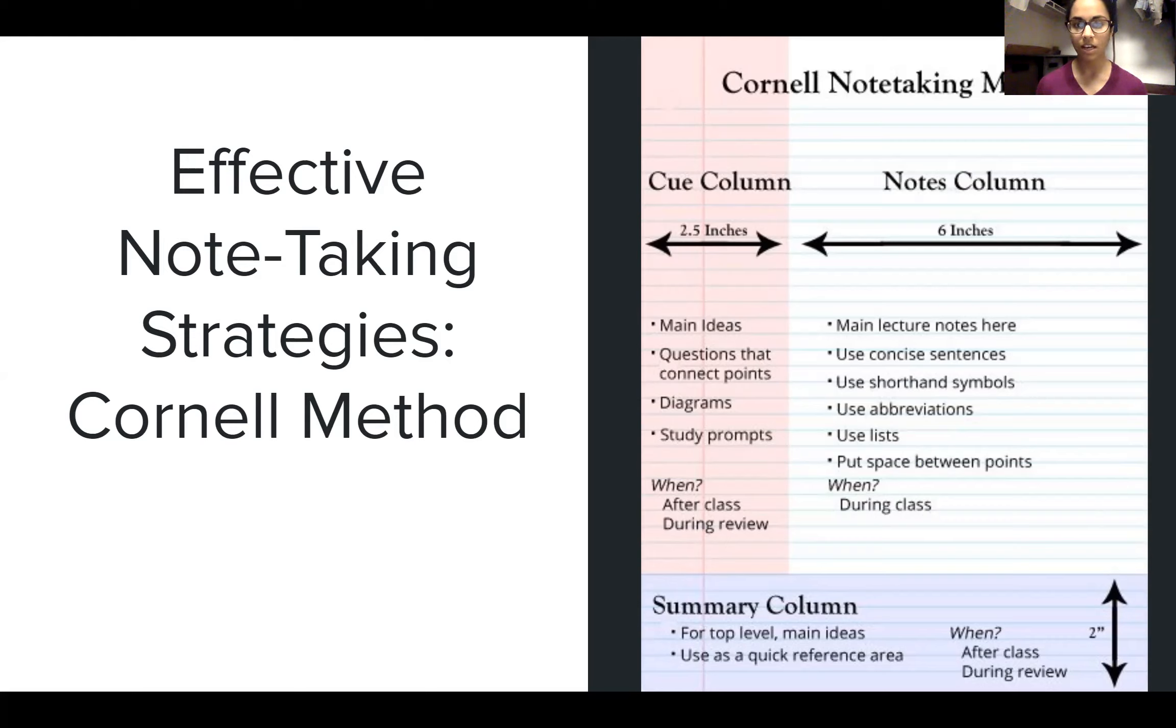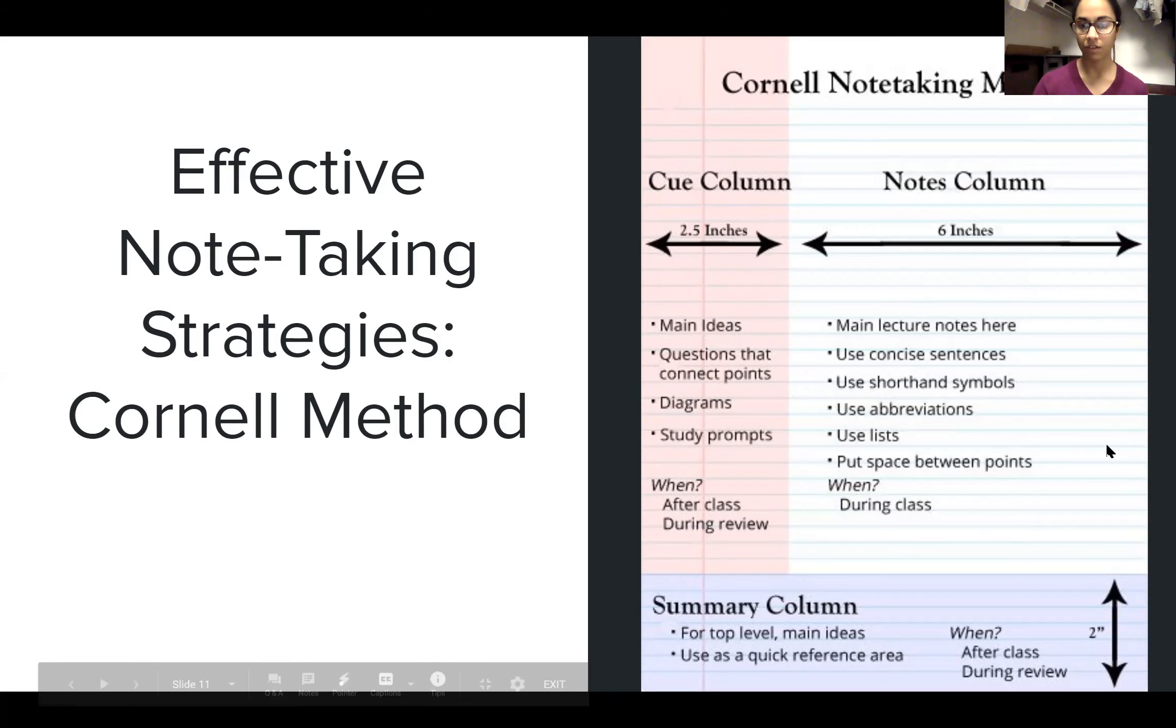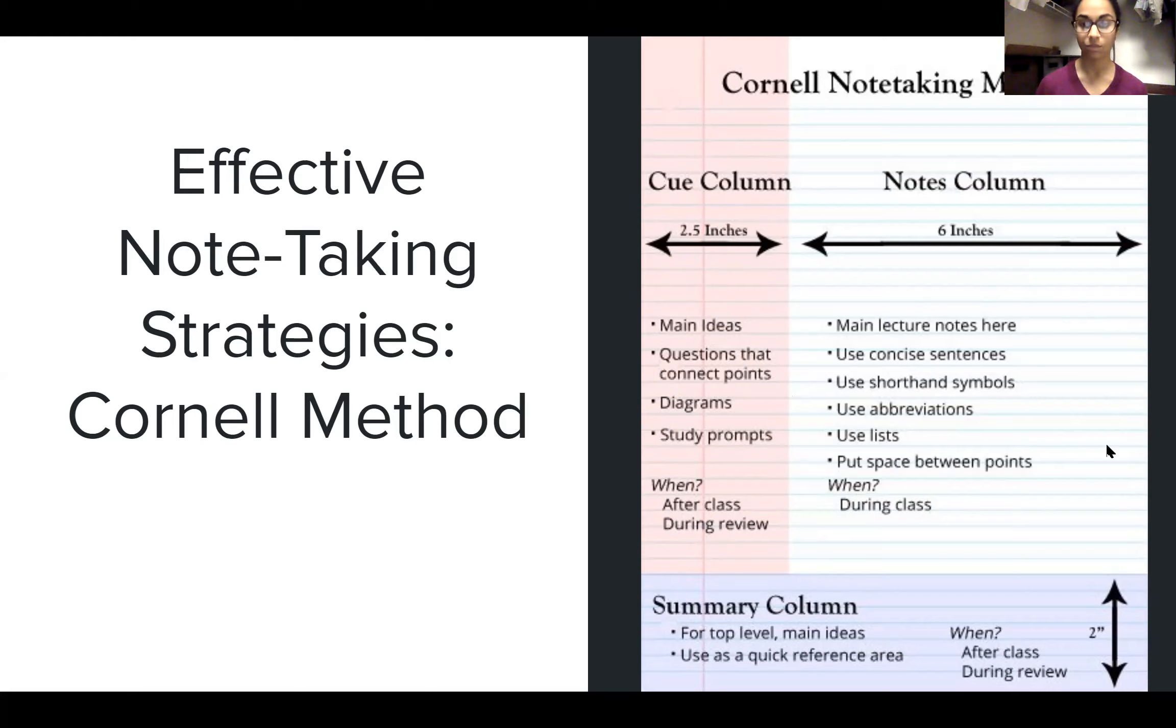So finally, the summary column. So this is a summary of your notes from this topic. It's an area that you can reference when you're trying to remember, what is the overall message? What should I take away from this information? And this also occurs after class during your review stages. So you can see that there's a couple steps going into this whole thing. There's the effective reading prior to class, there's the notes that you take during class, and then there's these after class steps.